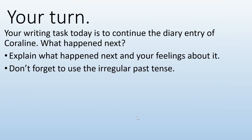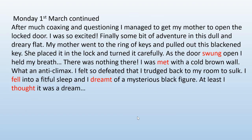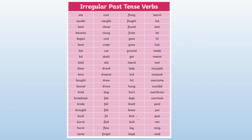So your turn. Your writing task today is to continue the diary entry of Coraline. What happened next? Explain what happened next and your feelings about it. Don't forget to use the irregular past tense. Here again is the model text if you want to use it to help you. I have also put a slide with some irregular past tense verbs if you would like to use them. Good luck with your writing and I will talk to you all tomorrow.